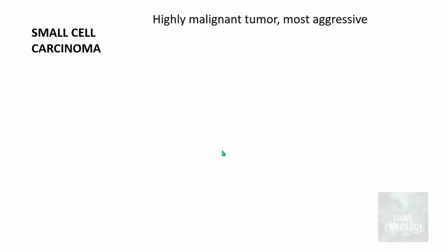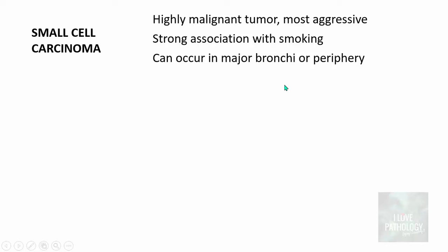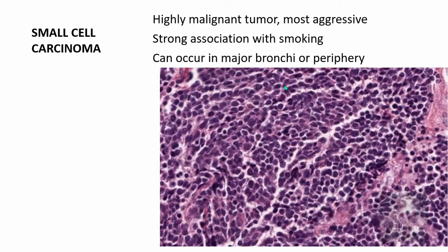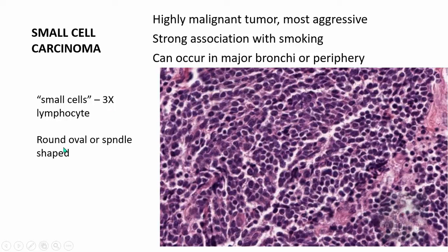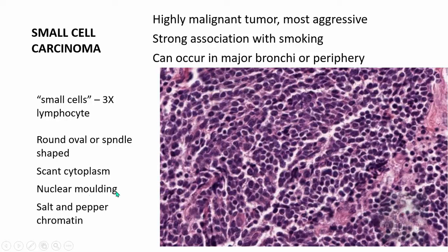Small cell carcinoma is the most aggressive and highly malignant lung tumor, with the strongest association with smoking. They occur most often in the central location but can also occur in the periphery. They are composed of sheets of dark round cells — approximately three times the size of a normal small lymphocyte — with scant cytoplasm and round, oval, or spindle-shaped nuclei. The characteristic feature is nuclear molding due to scant cytoplasm, and the nuclei show salt-and-pepper chromatin. These tumors have very high mitotic activity.